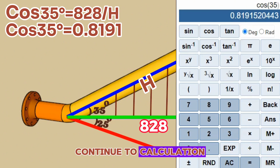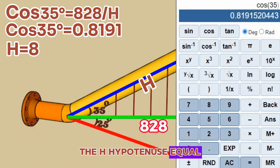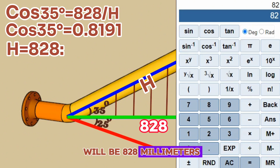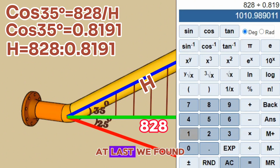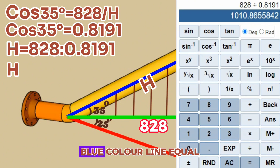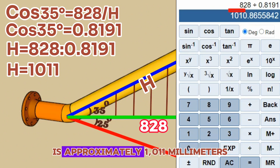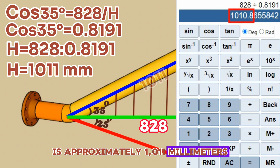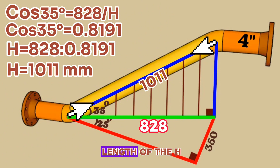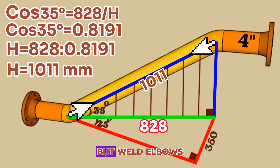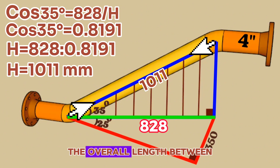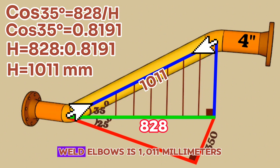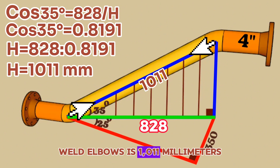Continuing the calculation, the hypotenuse H equals 828 millimeters divided by 0.8191. We found that the hypotenuse H — the blue colored line — is approximately 1011 millimeters. As we know, the length of hypotenuse H is also the distance between the centers of the butt-weld elbows. In this case, the overall length between the centers of the butt-weld elbows is 1011 millimeters.